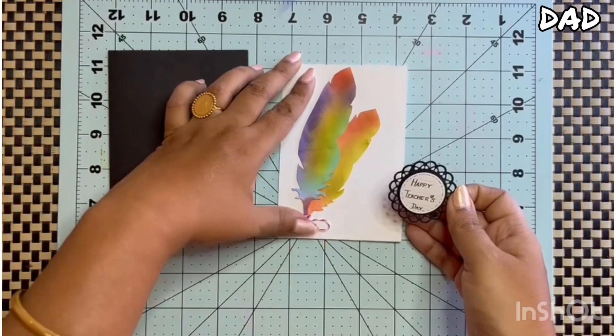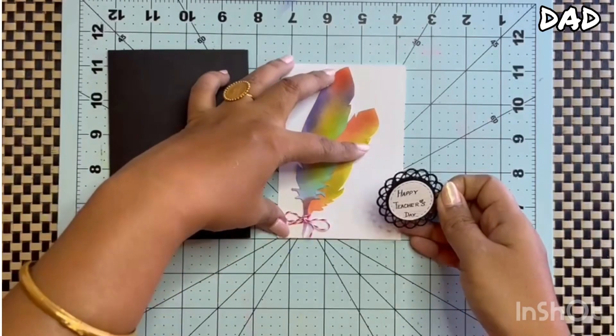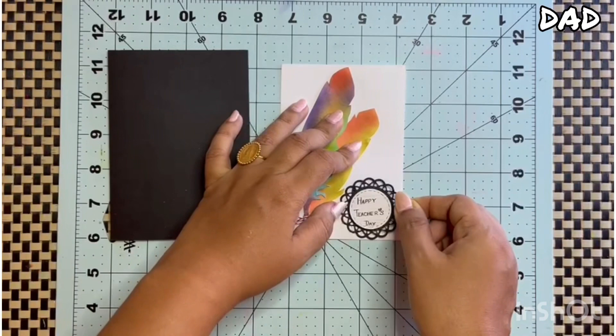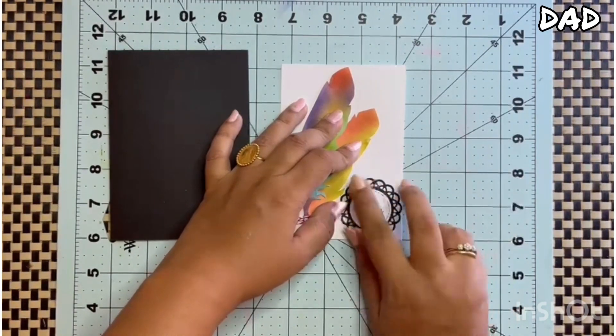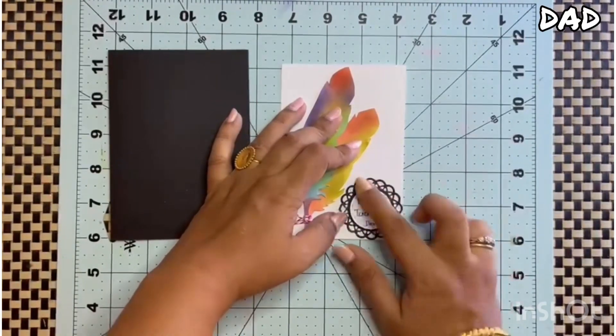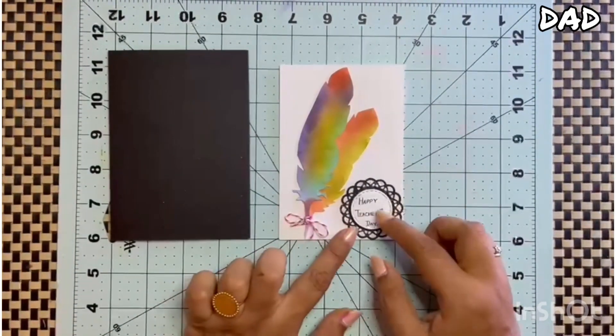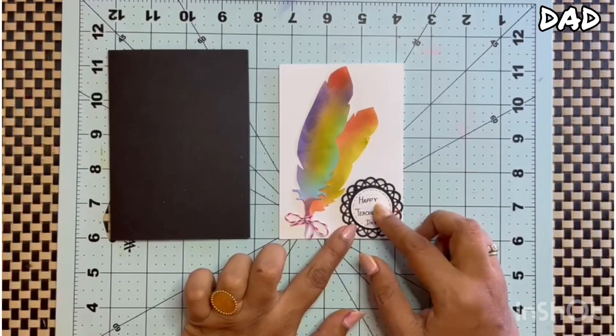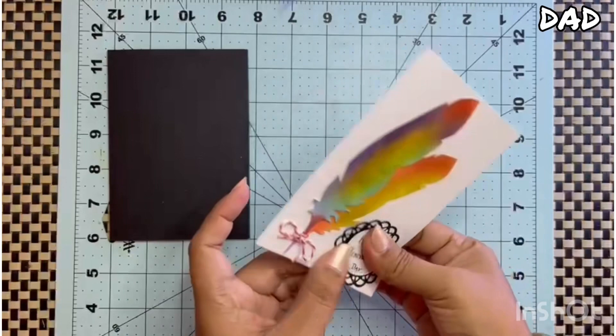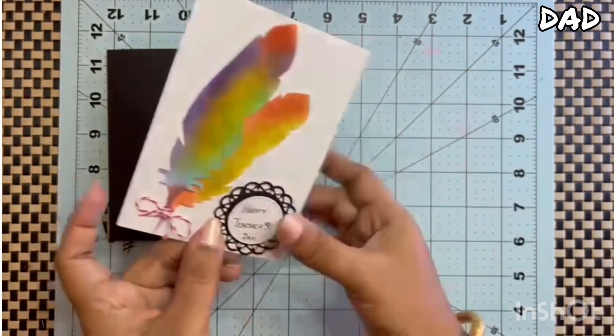Trying to see the straight line. So in this card, the only dimension is this sentiment here. I have used some double-sided foam tape for my sentiment as you can see here.